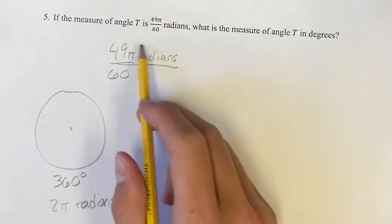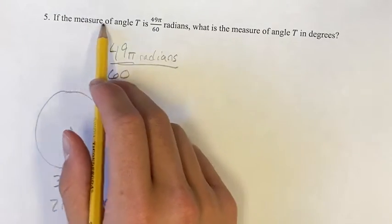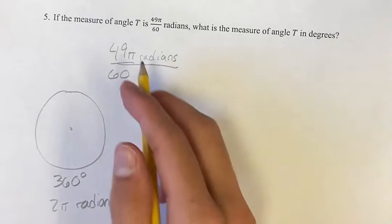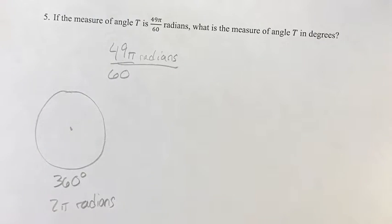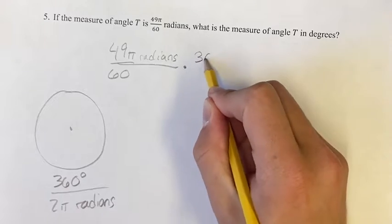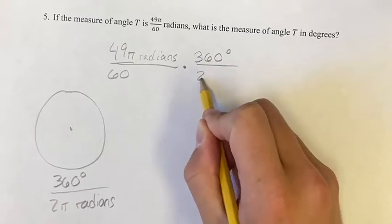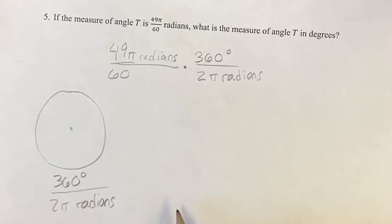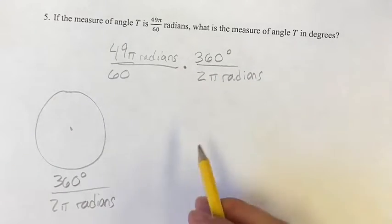So if we want to multiply this, our measure of angle T, by something without actually changing its measure, you can multiply it by one. You multiply whatever you have by one, the value doesn't change. So we're multiplying it by 360 degrees over 2π radians. This is the same as multiplying by 4 over 4 or 10 over 10, it's just multiplying by 1, it's not actually changing it.